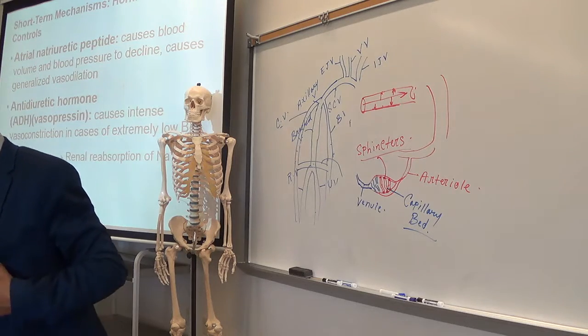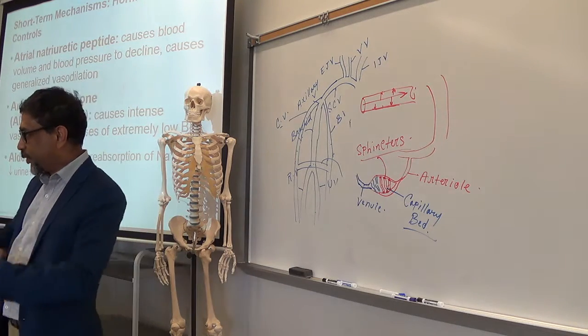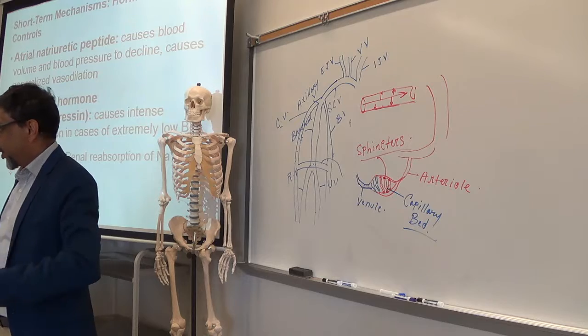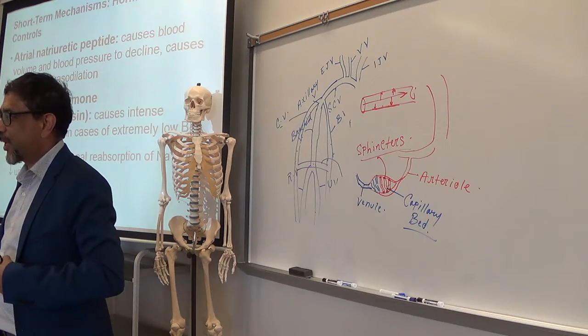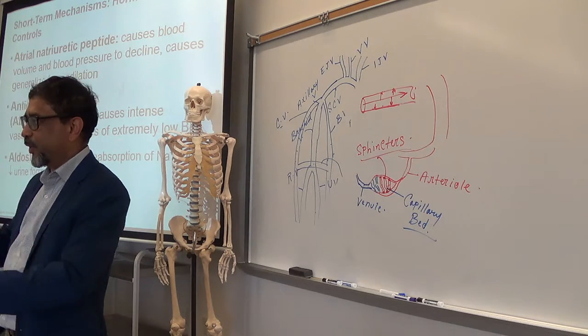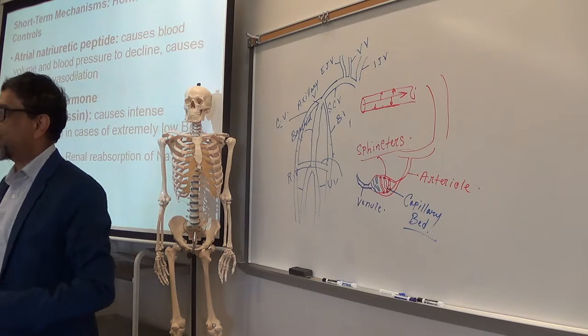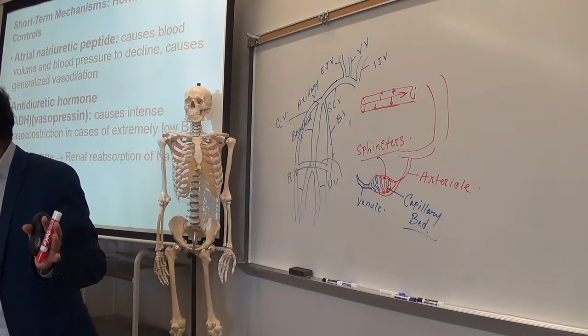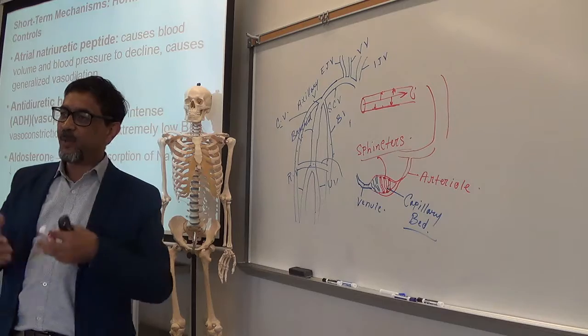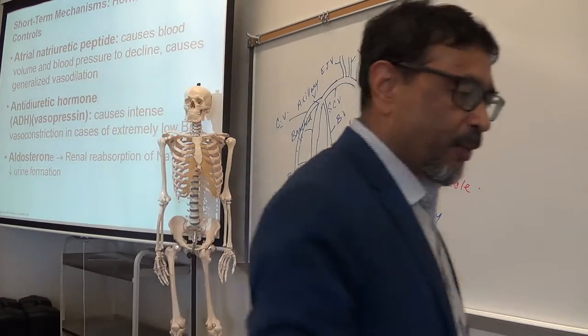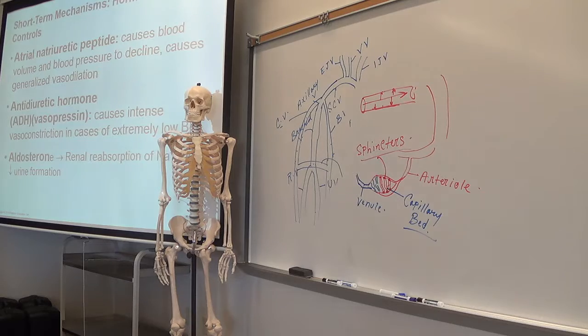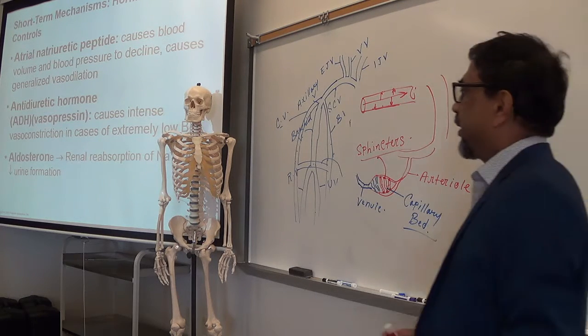Water will remain in the body. If less urine is produced, then volume will be more in the blood. Blood volume will be more because water cannot get out. So that's the function of antidiuretic hormone. Blood pressure will go up. More antidiuretic hormone means blood volume will be more and blood pressure will be more.